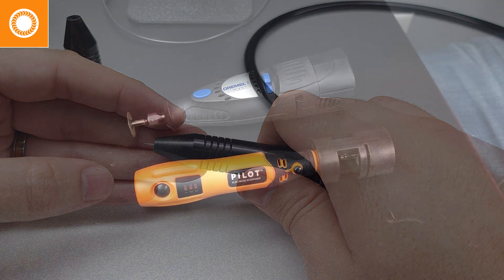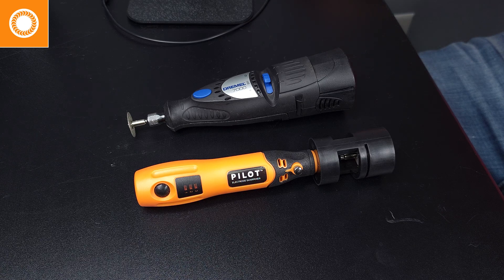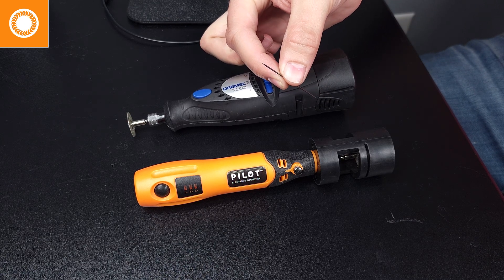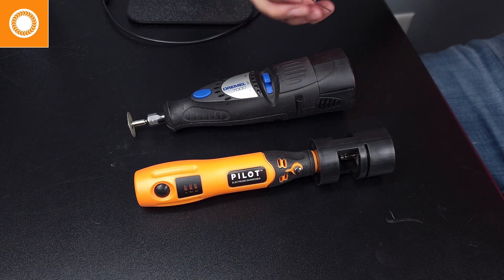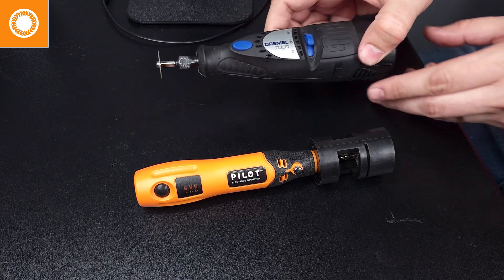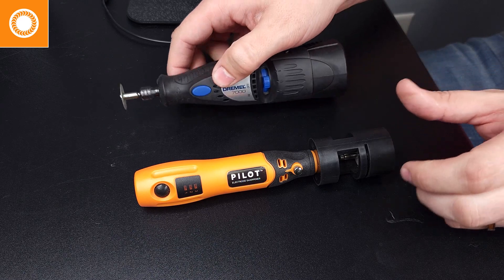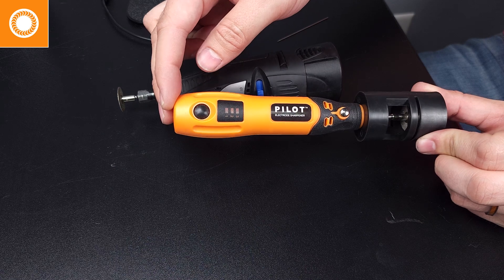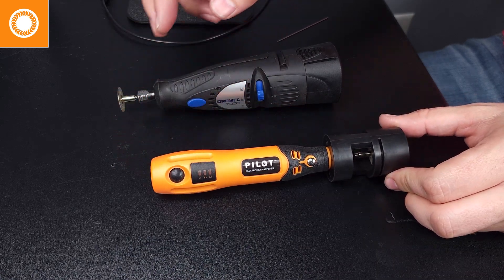We're going to be covering the proper sharpening of your Sunstone or Orion electrodes for the Orion welders. Whether we're using a Dremel tool or the new Sunstone Pilot electrode sharpener, both of these are going to be covered in this video.